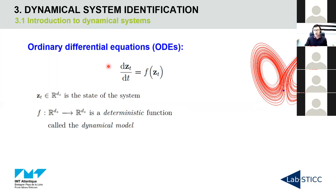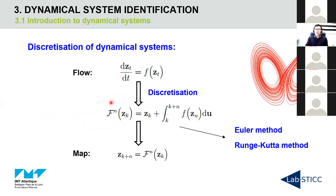An ODE has the form dz/dt = f(z), where z is the state of the system and f is a deterministic function called the dynamical model. If we know the dynamical model f, we can calculate the trajectory of the system given the initial condition. The continuous form is called the flow. From the flow, we can obtain the discrete form called the map by integrating f through time. Usually these integrals do not have analytic solutions — we approximate them using numerical methods such as the Euler method or Runge-Kutta method.